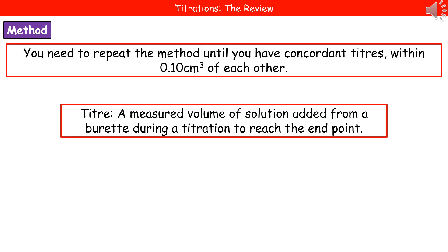What we need to do in our titration is repeat that method until we have concordant titers. The word titer is a measured volume of solution that we're adding from the burette to reach the end point, and the word concordant means that they're within 0.1 centimetres cubed of each other. Make sure you remember that fact because they could ask you to define what a concordant titer is.